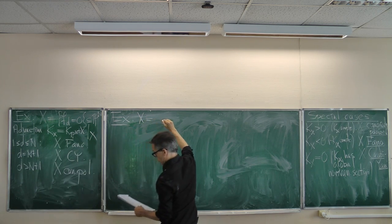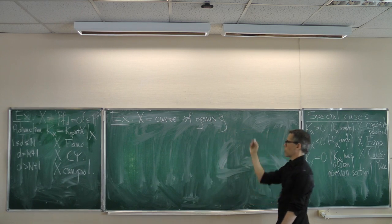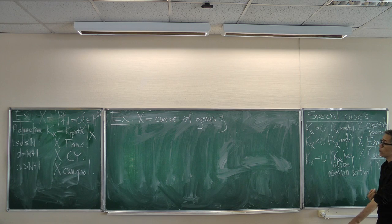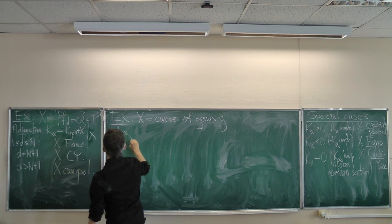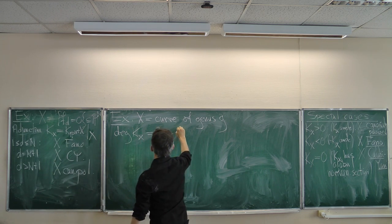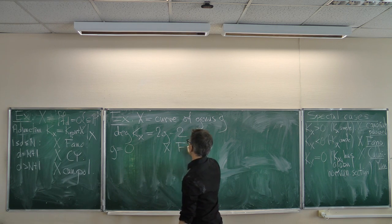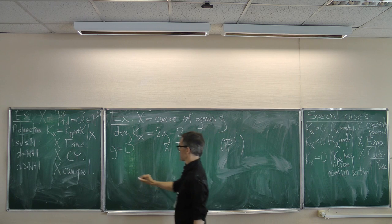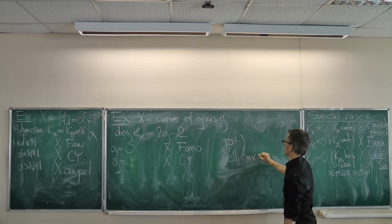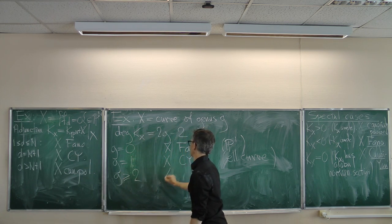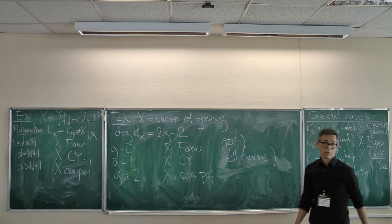Take X to be an algebraic curve of genus g. A curve has algebraic dimension one, but as a complex manifold it's a Riemann surface of real dimension two. The degree of K_X is 2g − 2. So if g = 0, X is Fano — this is P¹. If g = 1, X is Calabi-Yau — this is an elliptic curve. If g ≥ 2, X is canonically polarized.